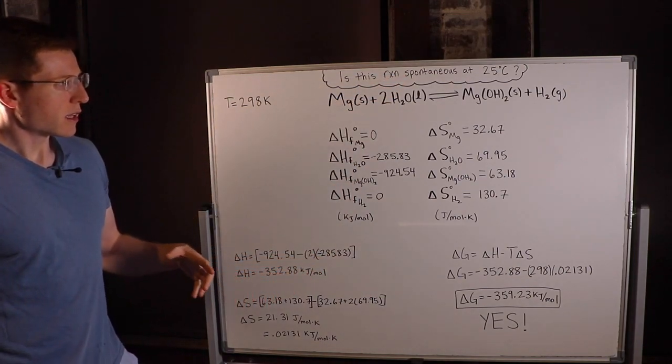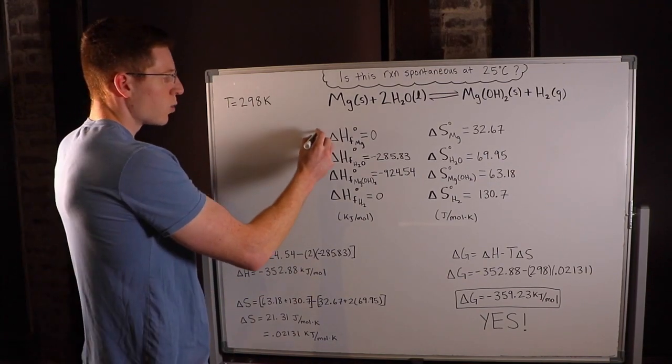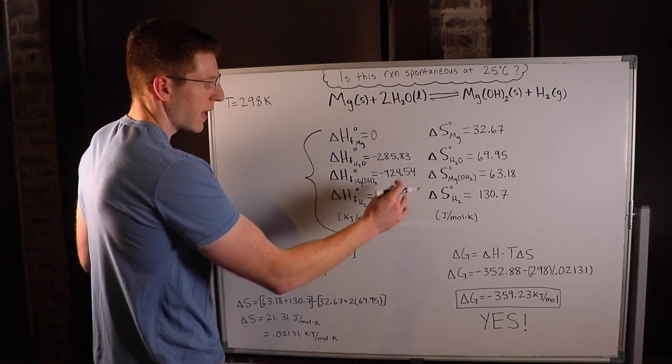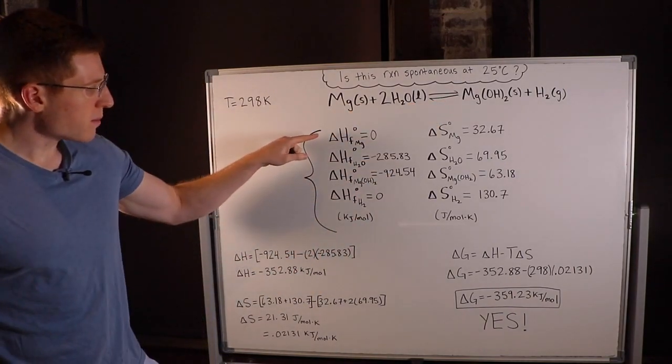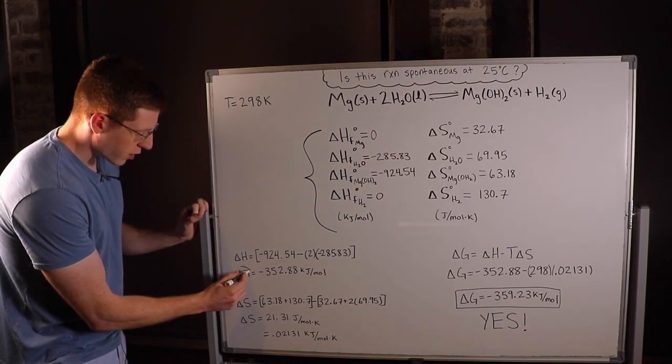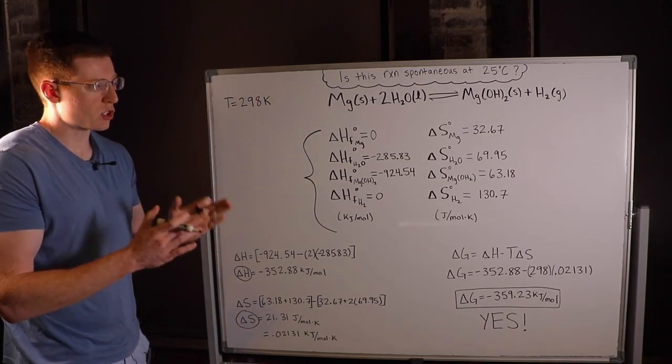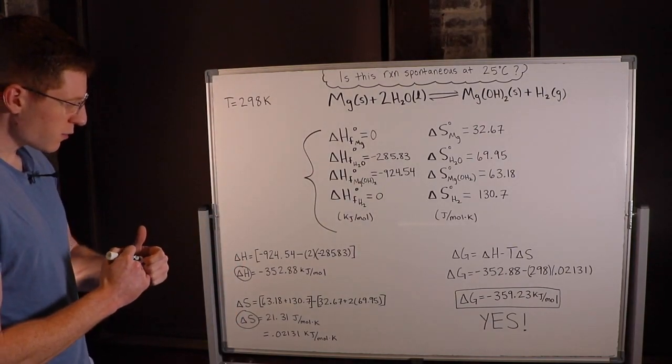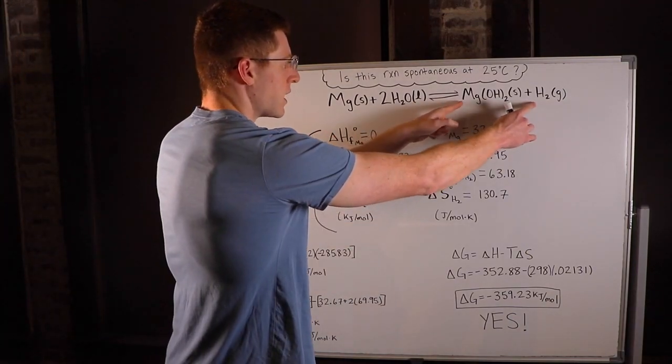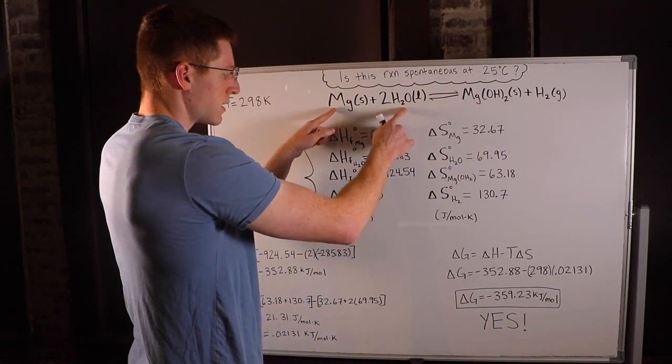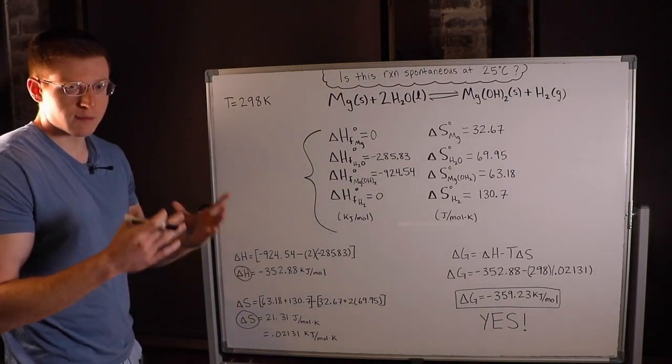In this case, we were given the standard enthalpies and entropies of all reactants and products. From this data, we can find the overall delta H and delta S using those equations I mentioned. If we add up all the delta H values for products and subtract all the delta H values for reactants, we get the overall delta H. We can do the same for entropy.